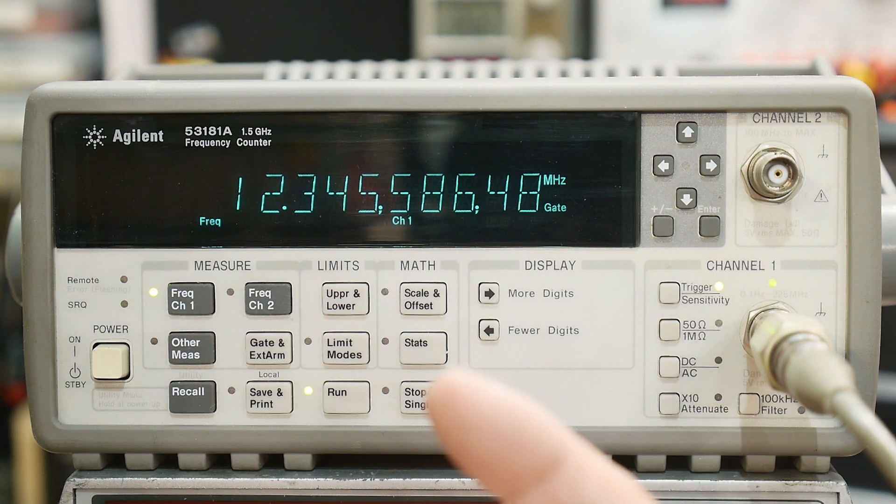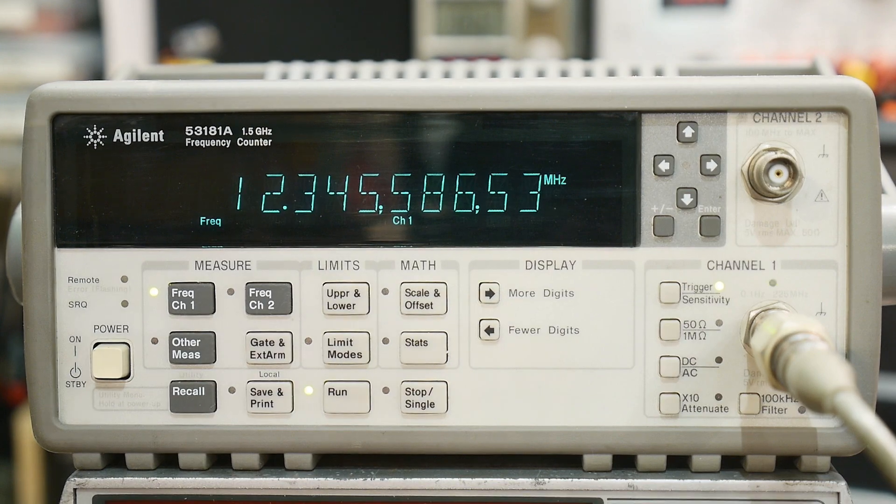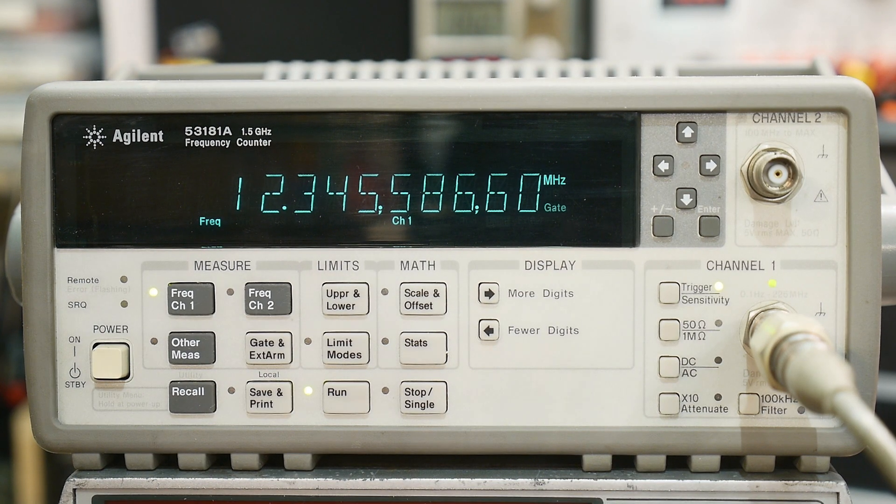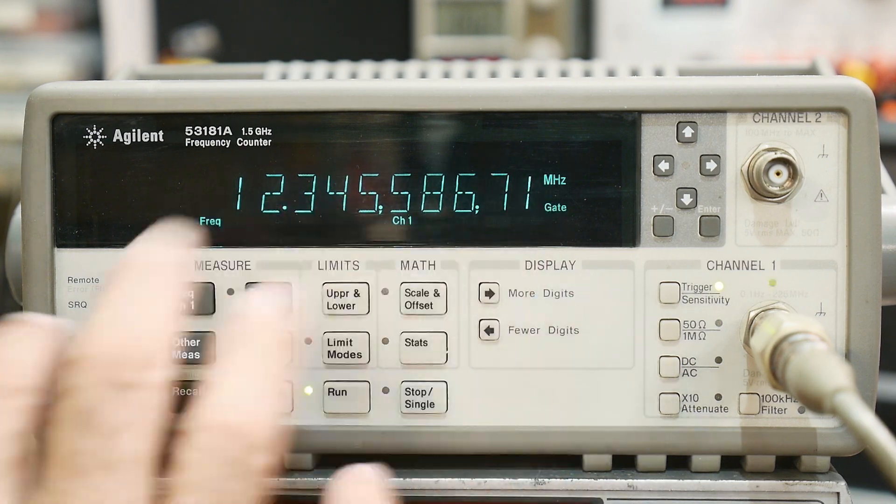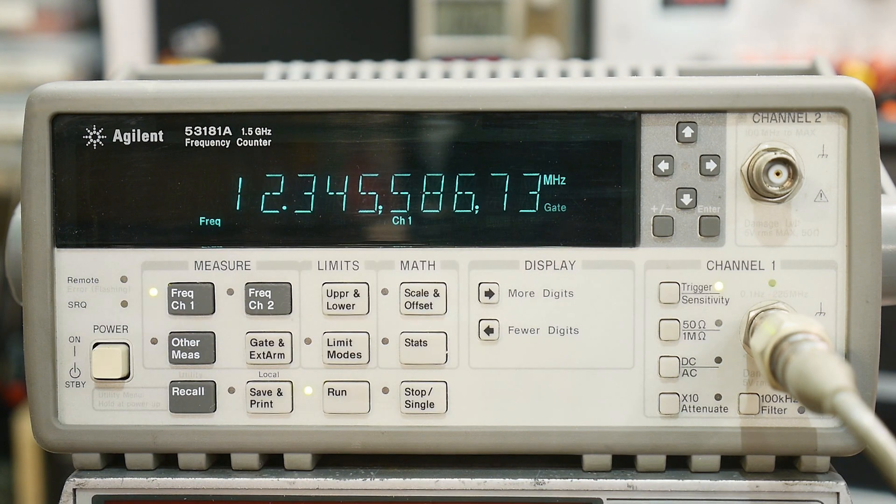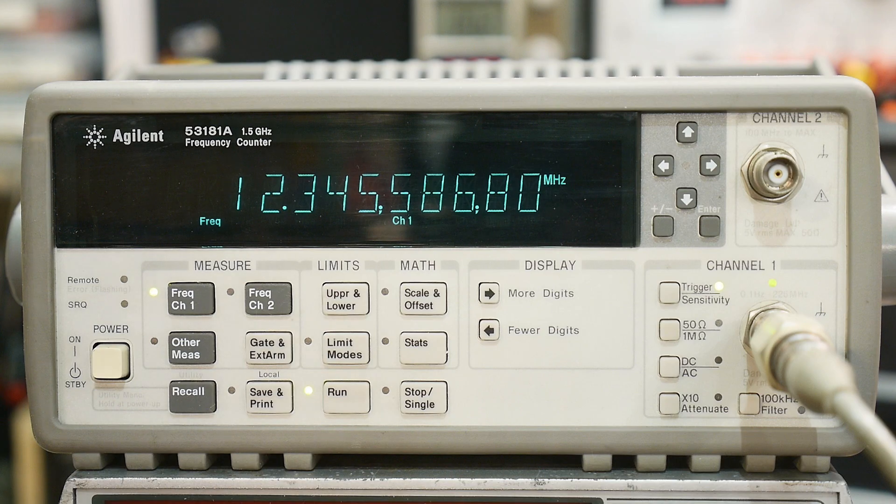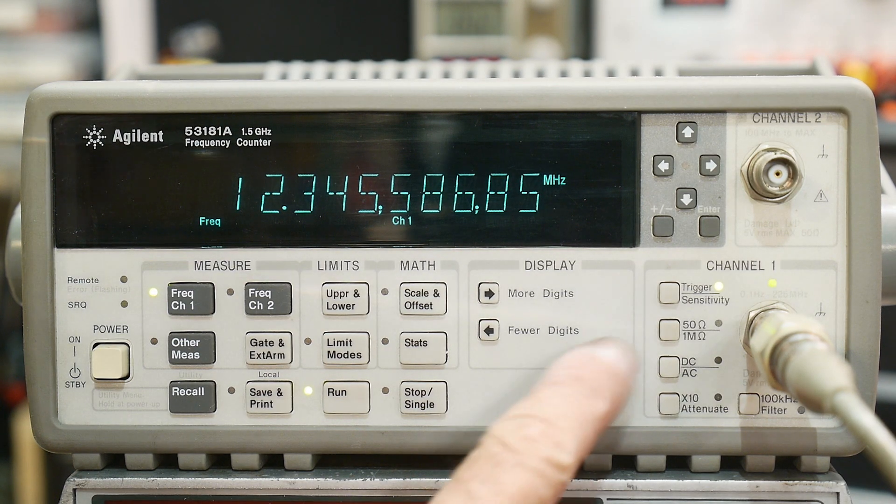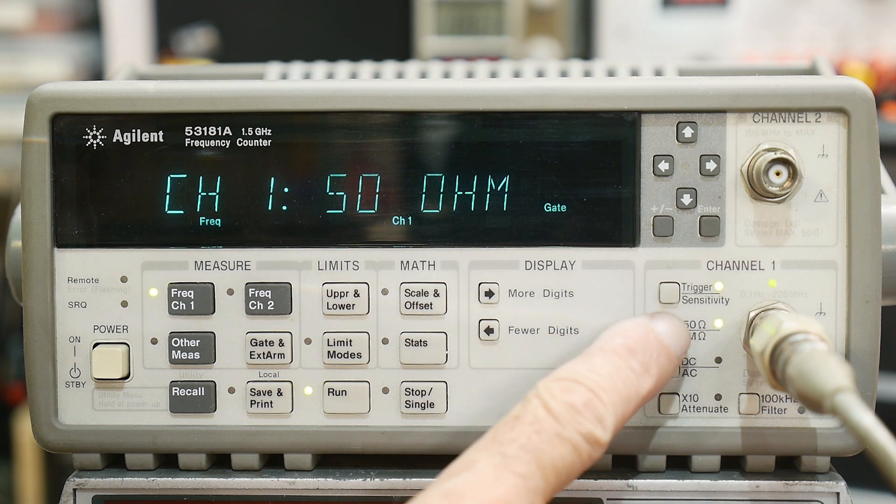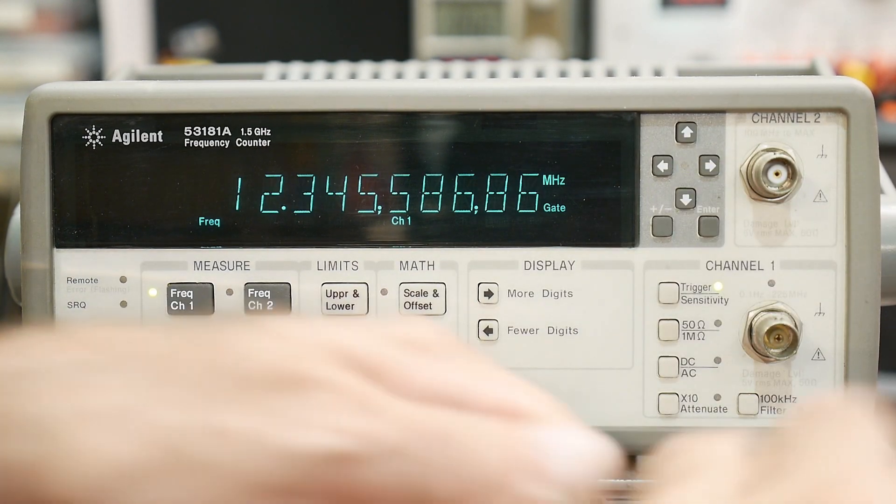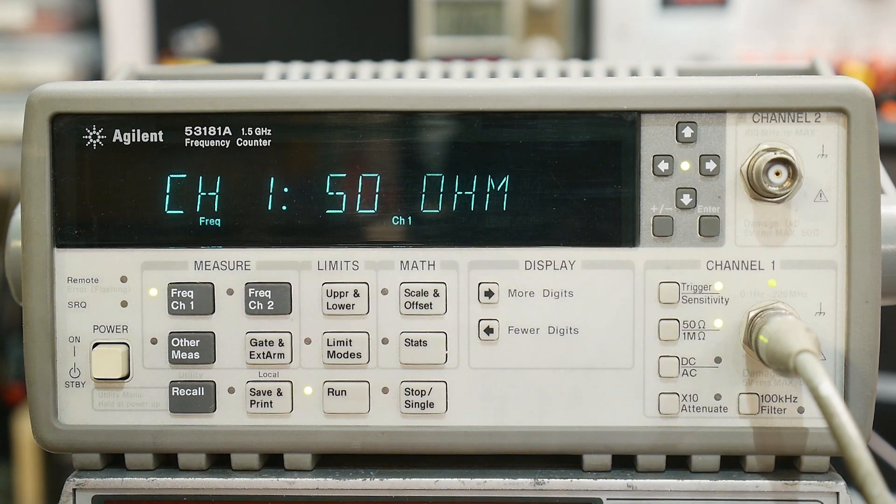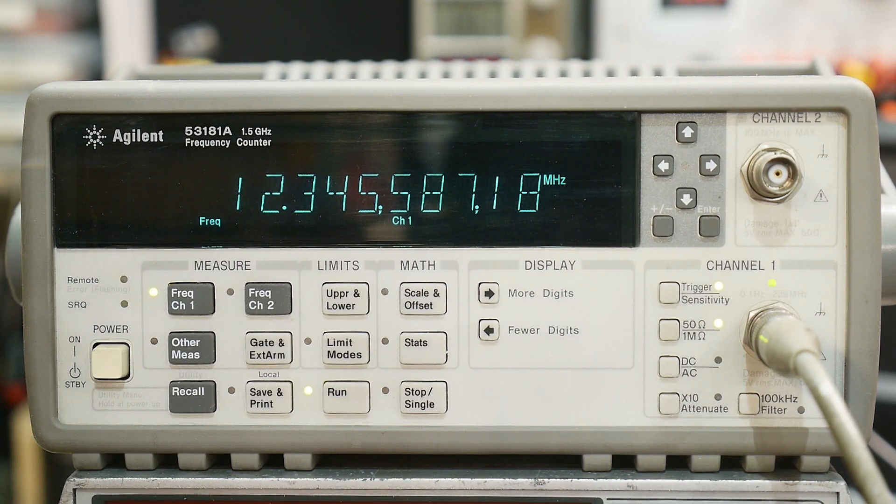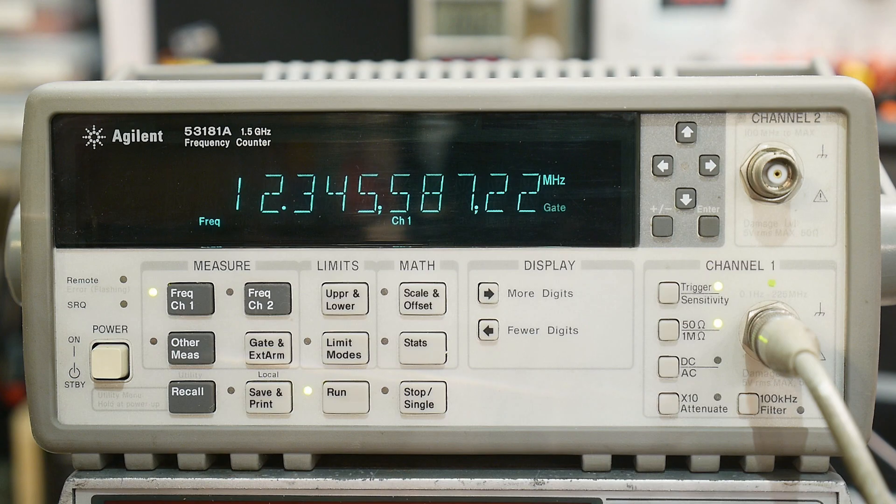It's got channel one, channel two. It does not have a third channel. The second channel goes from 100 megahertz to 1.5 gigahertz. Then it'll do a bunch of stats and all kinds of math and a whole bunch of really fancy stuff that I probably will never use. Trigger sensitivity, 50 ohm load—that's nice, I don't have to have my 50 ohm load, I can just tell this thing I've got 50 ohms inside.